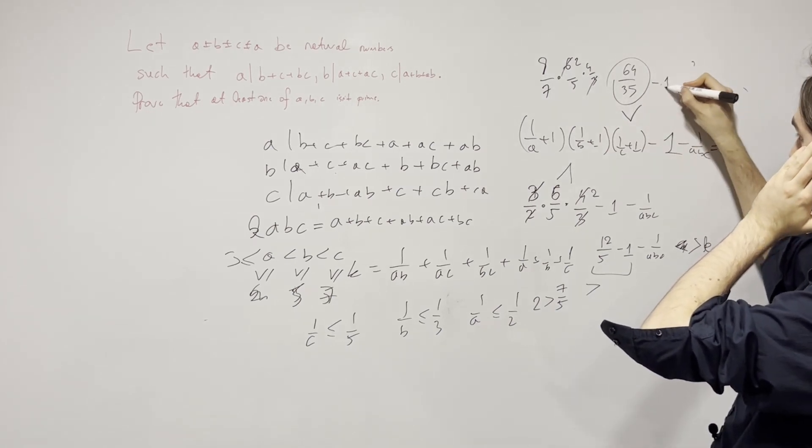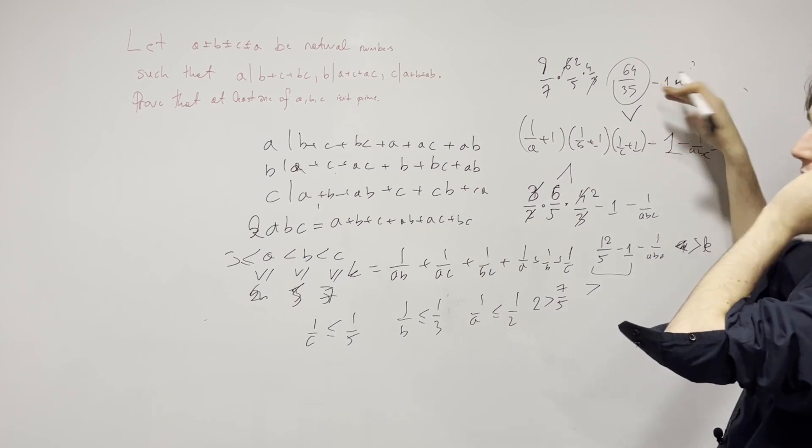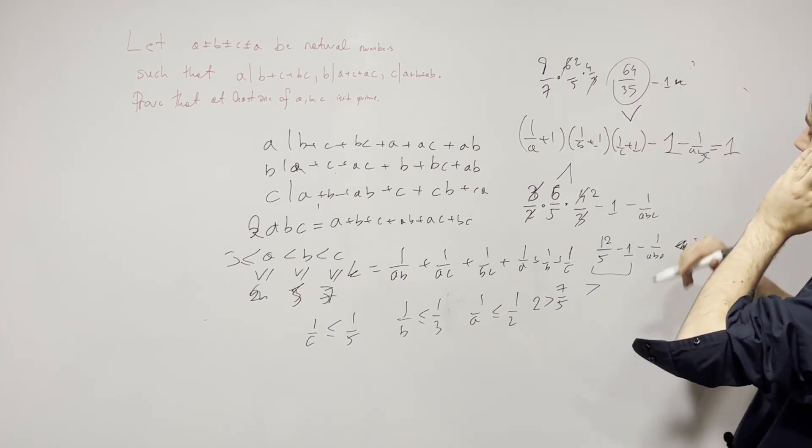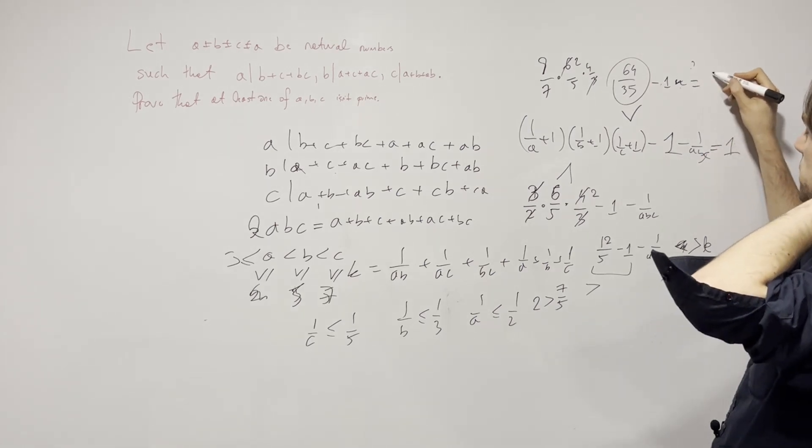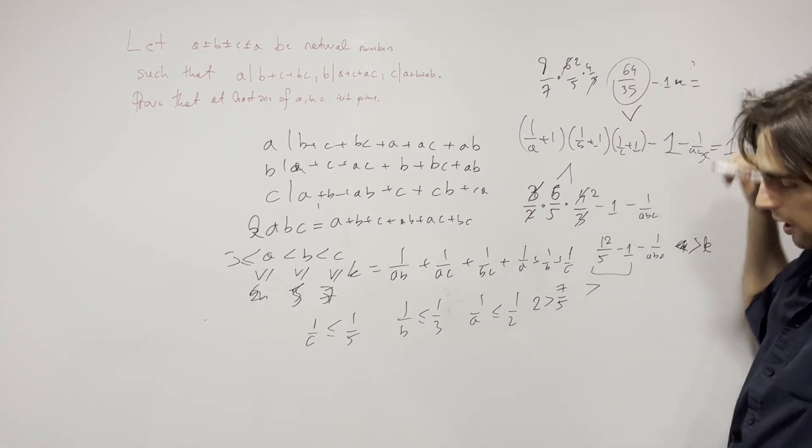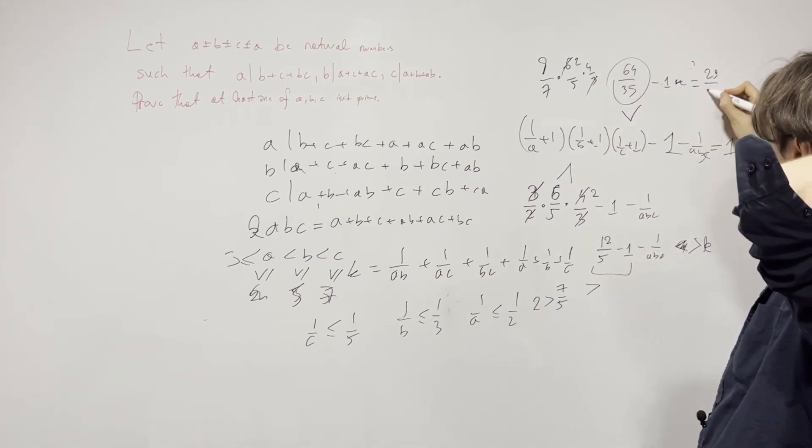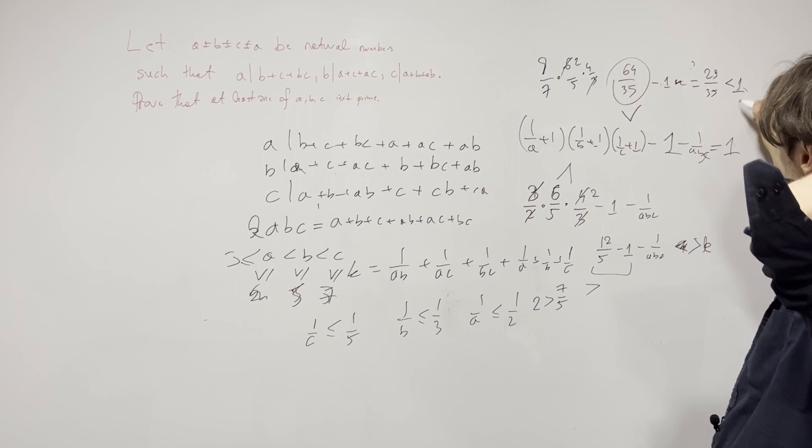So this minus 1 minus, it's less than this minus 1, because we can practically think this is 0. And this is going to be 65, 64 minus 35. It's going to be 29 over 35, which is less than 1.